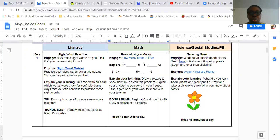Explain your learning. Draw a number to show how you solve this problem. Explain your answer to someone in your house. Take a picture of your work to share with your teacher. So you're going to choose a problem and then tell how you solved it. And then bonus bump. Begin at zero and count to 50. Draw a picture of 13 objects and read for 15 minutes.